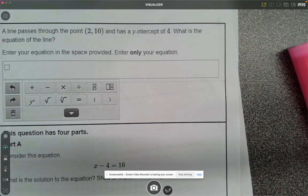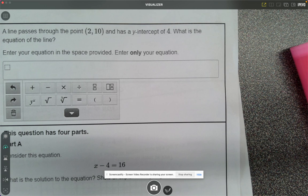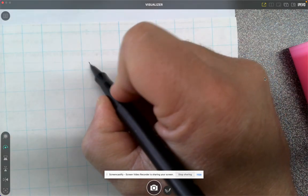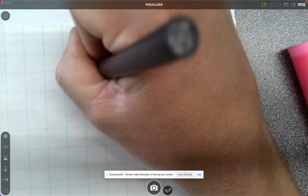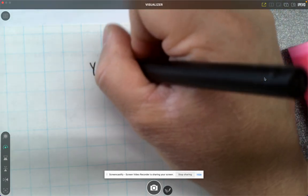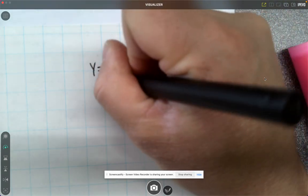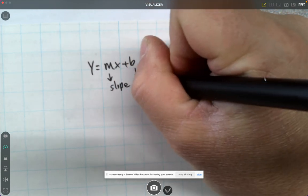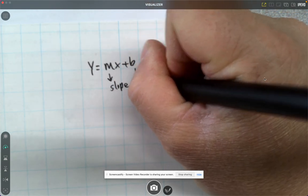All right, welcome back to episode 2 of Learning Math MCAS by Mistake. We're going to start off with linear relationships, which was one of the big topics from 8th grade math. If you think linear relationships in 8th grade math, you're thinking y equals mx plus b, where m is your slope and b is your y-intercept.